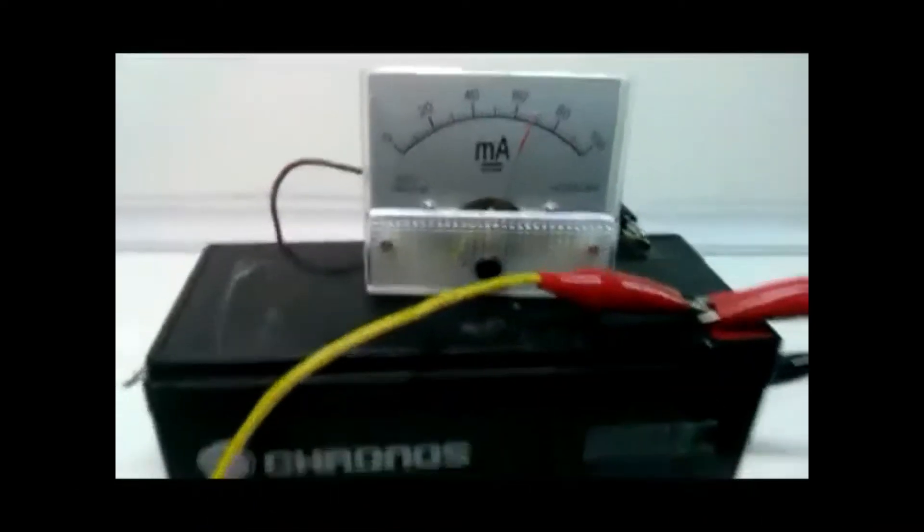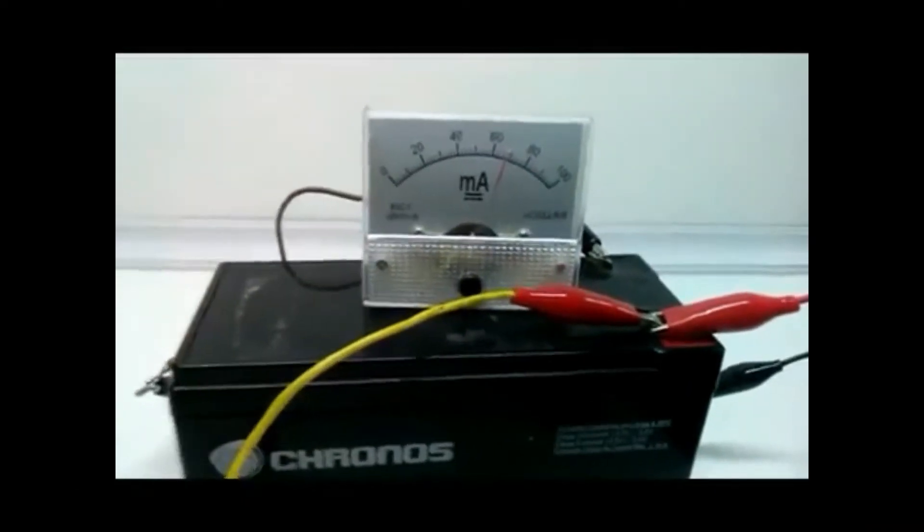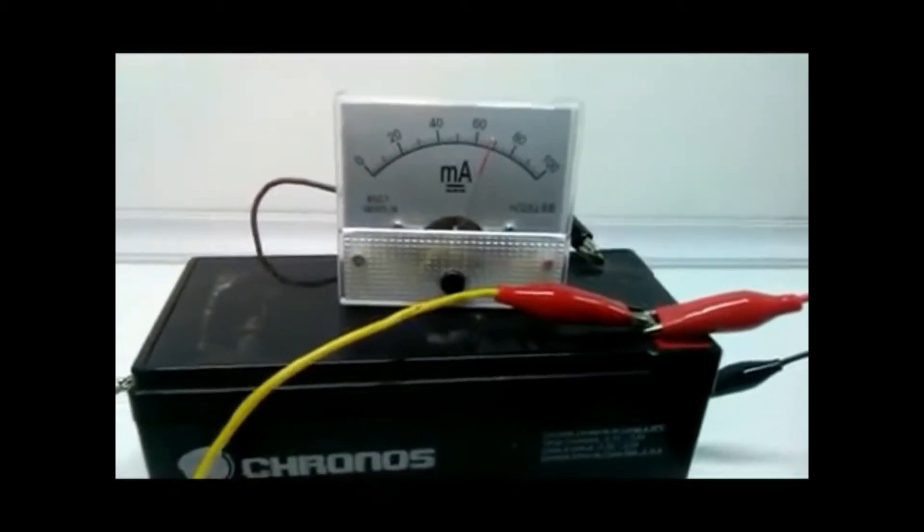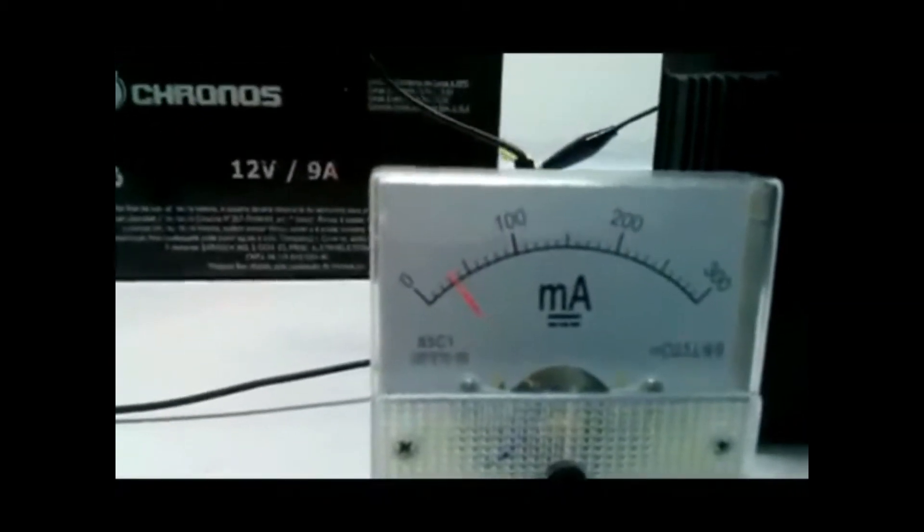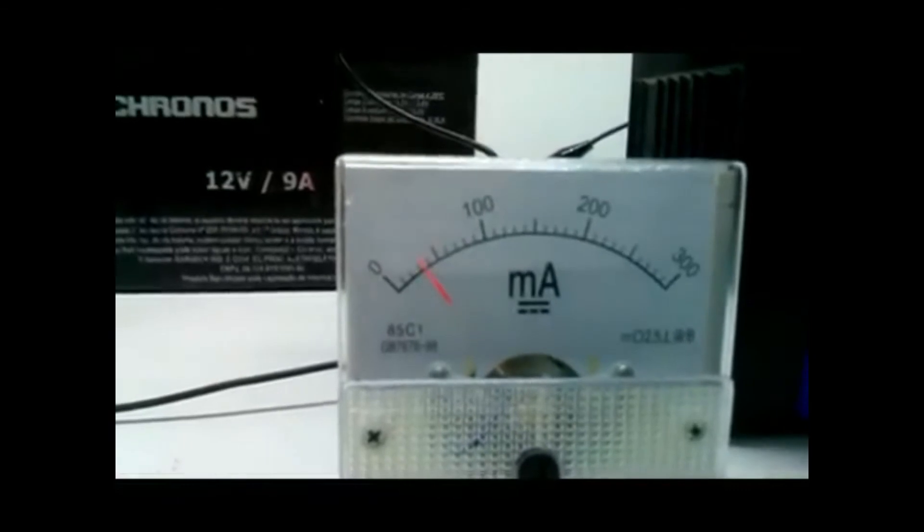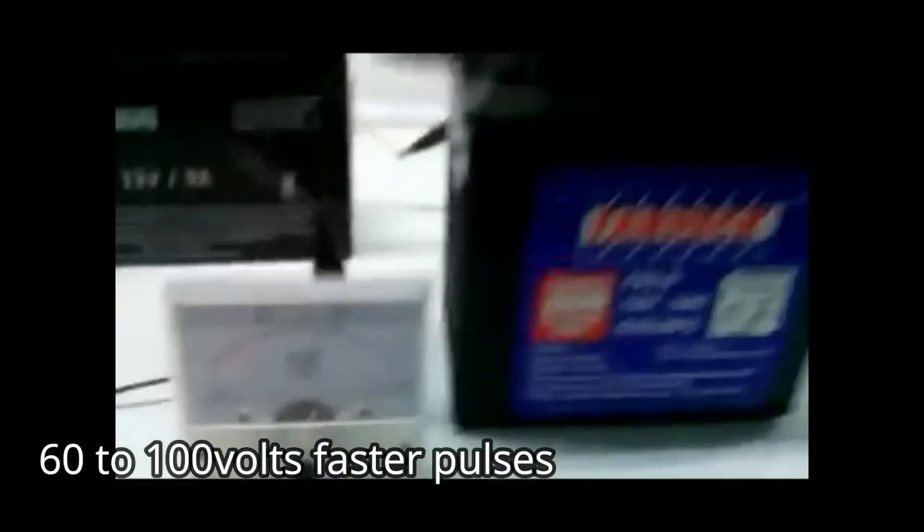This circuit is drawing 70 milliamps from this primary battery, or another 12 volt power supply, and keeps charging the secondary battery at 35 milliamps with high voltage fast pulses.